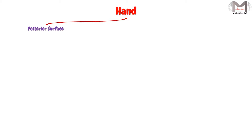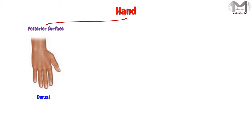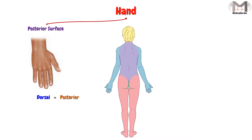Regarding the hand, the back of the hand or the posterior surface of the hand will be described with the Dorsal term. The Dorsal here will look like the posterior term of the hand if the person stands in the anatomical position. So we will not say the posterior surface of the hand — we will say instead the Dorsal surface of the hand.